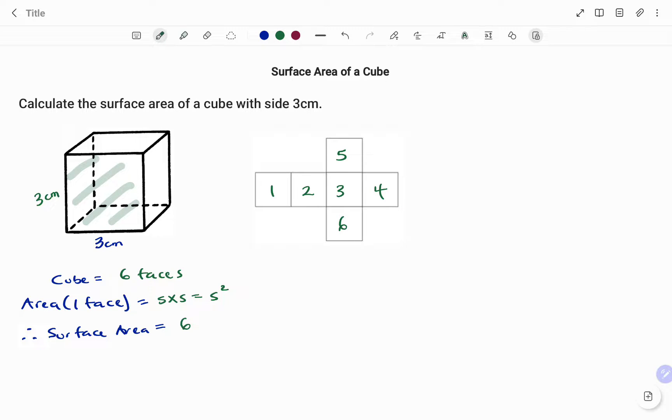So to calculate the surface area of the cube with side 3 centimeters, we have that as 6 times 3 squared. That's equal to 6 times—3 squared is 9—therefore...